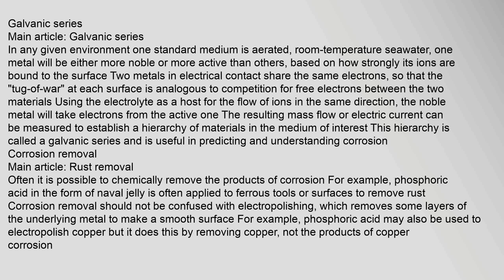Galvanic series — main article. In any given environment — one standard medium is aerated, room-temperature seawater — one metal will be either more noble or more active than others, based on how strongly its ions are bound to the surface. Two metals in electrical contact share the same electrons, so the tug-of-war at each surface is analogous to competition for free electrons between the two materials, using the electrolyte as a host for the flow of ions. The noble metal will take electrons from the active one. The resulting mass flow or electric current can be measured to establish a hierarchy of materials, called a galvanic series, which is useful in predicting and understanding corrosion.